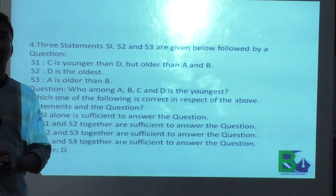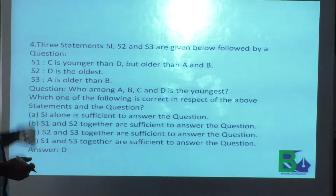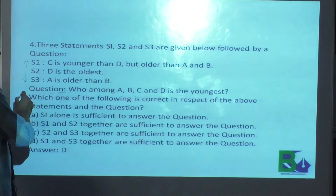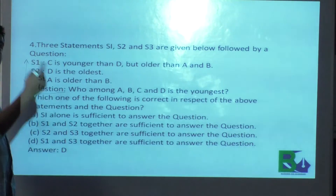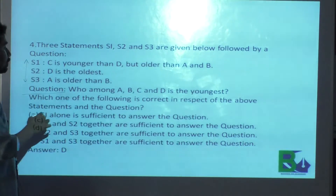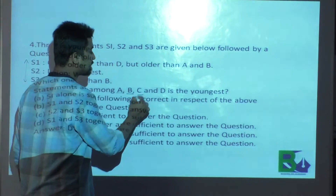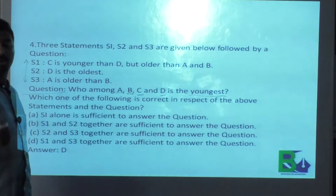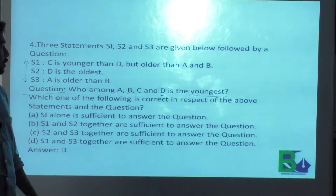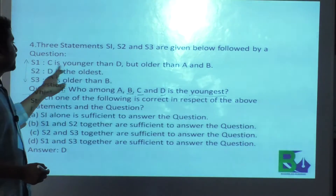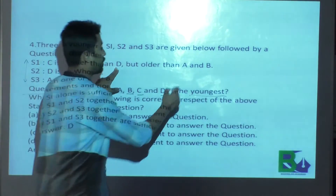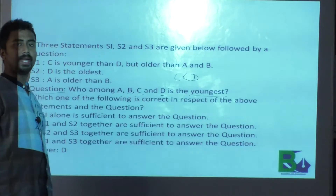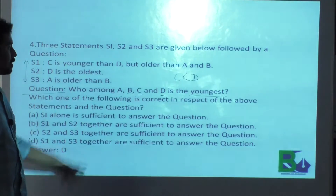This is a question from data sufficiency. Three statements are given and one question is there. First, read the question — then go for the statements. The question is: who among A, B, C, and D is the youngest? We have to find out the youngest one. Statement 1: C is younger than D. Statement 2: C is older than A and B. Statement 3: A is older than B.